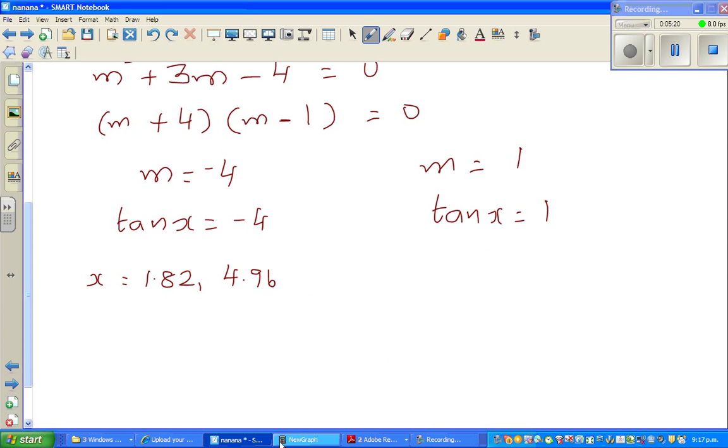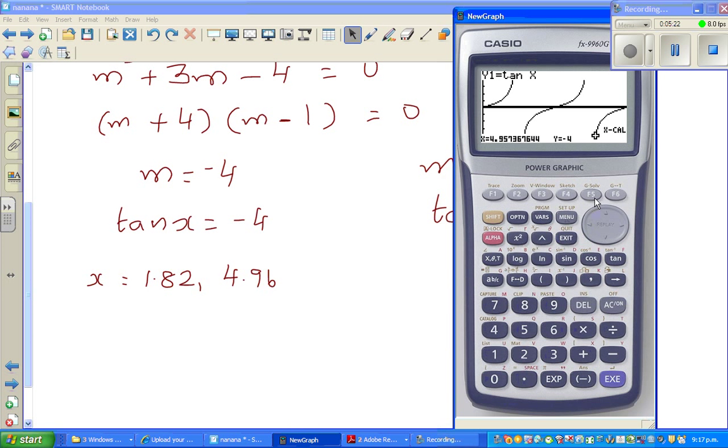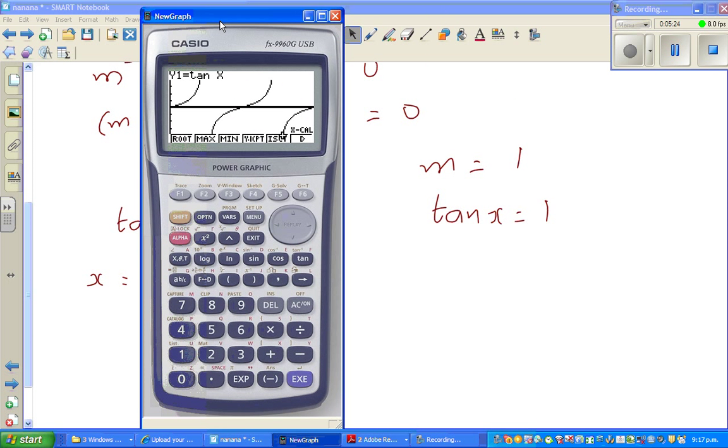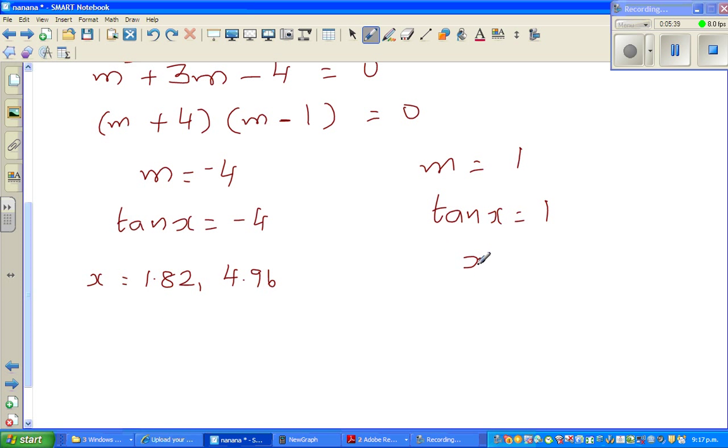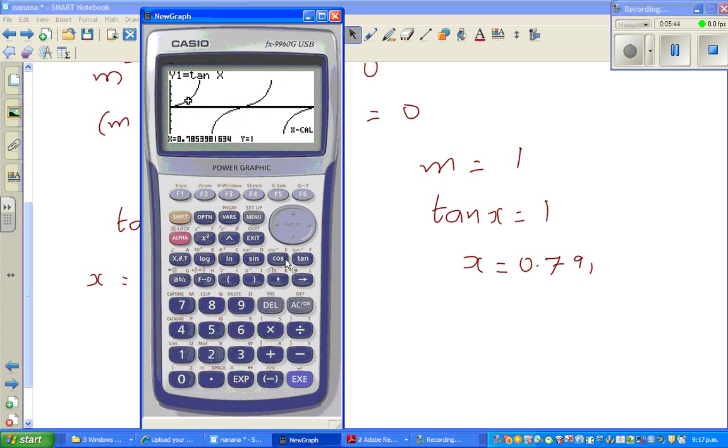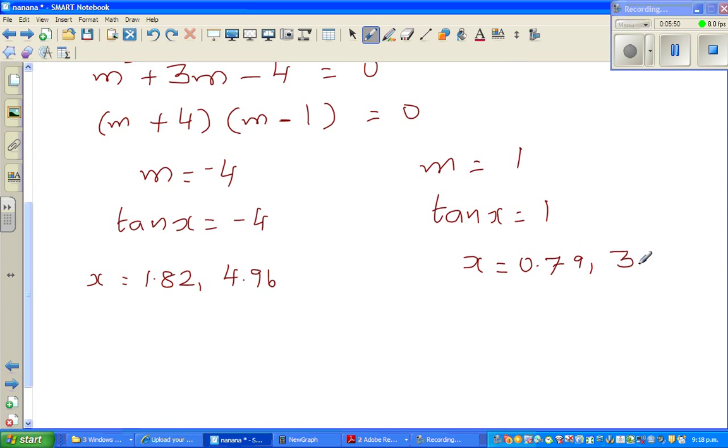And here, again, g solve. And let me bring this on this side. And I want to find x when y is 1. I think that's it. You can see, the next answer would be, so 0.79. So x is 0.79. You have one more value. And if you press this replay, this is 3.93.